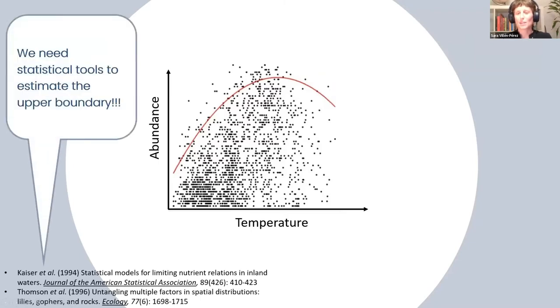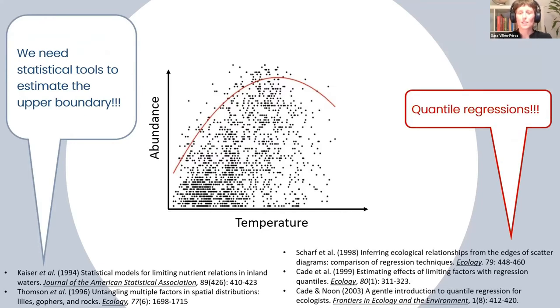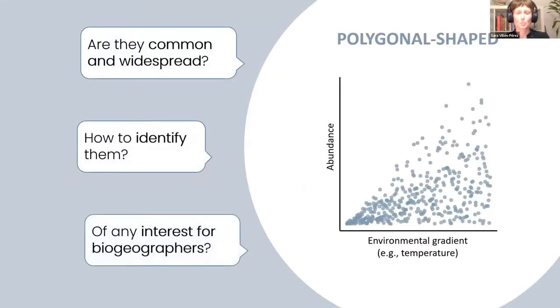In the past, some authors called attention to this and called for statistical tools to estimate the upper boundary. Today we know that we can estimate this upper boundary using quantile regression models. But what about these polygonal-shaped patterns? Are they really common and widespread? Can we easily identify them? And most important, are they of any interest for biogeography?